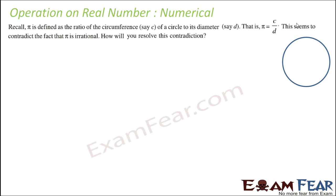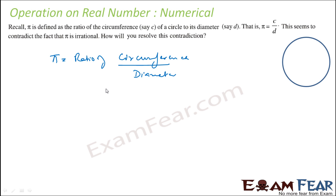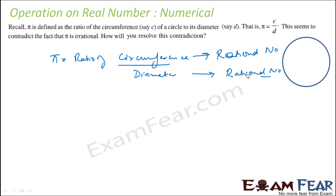Let us take an example. Pi is defined as the ratio of the circumference of a circle to its diameter. This seems to contradict the fact that pi is an irrational number — circumference is a length, length is always a rational number, and diameter is also a rational number, so rational divided by rational should give a rational number. What is the contradiction?